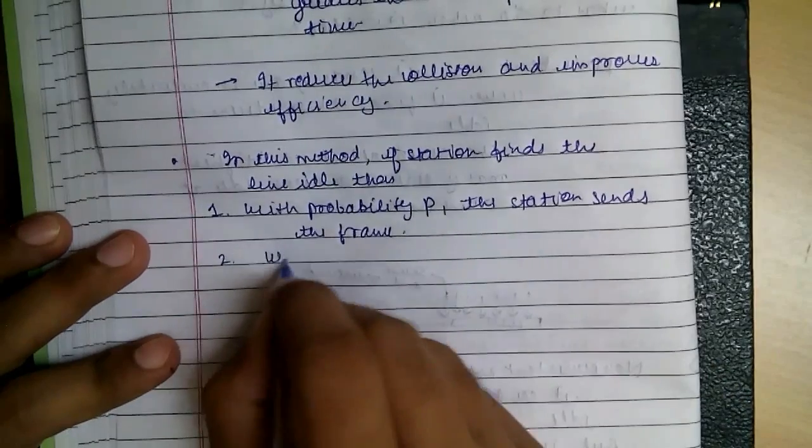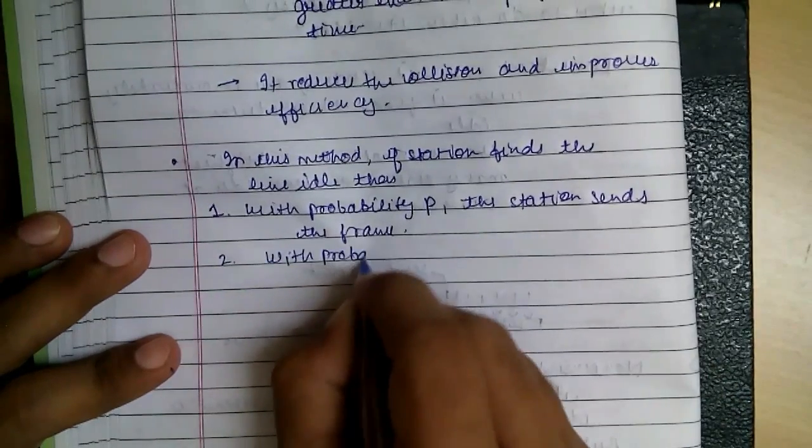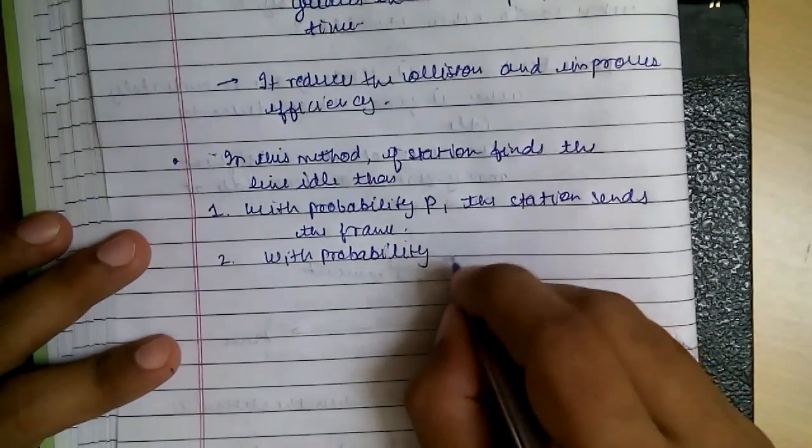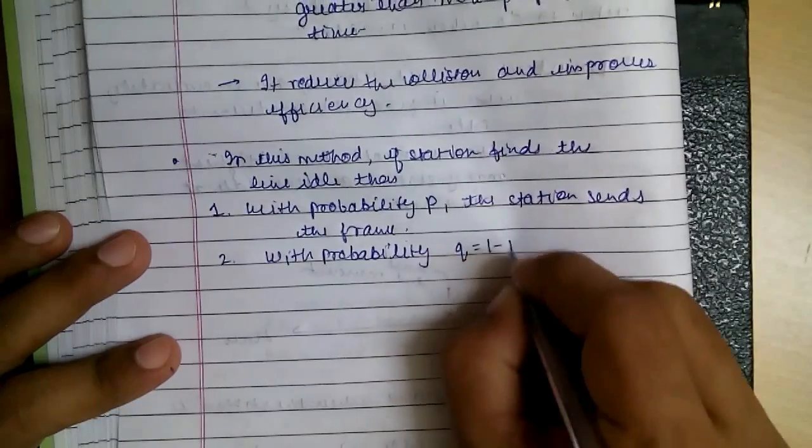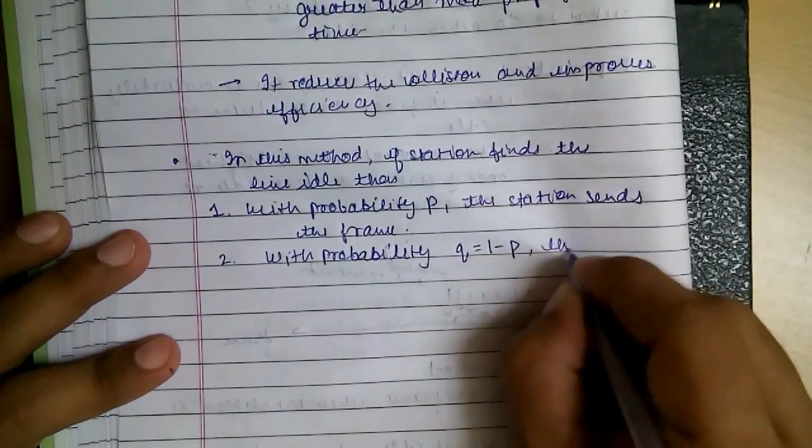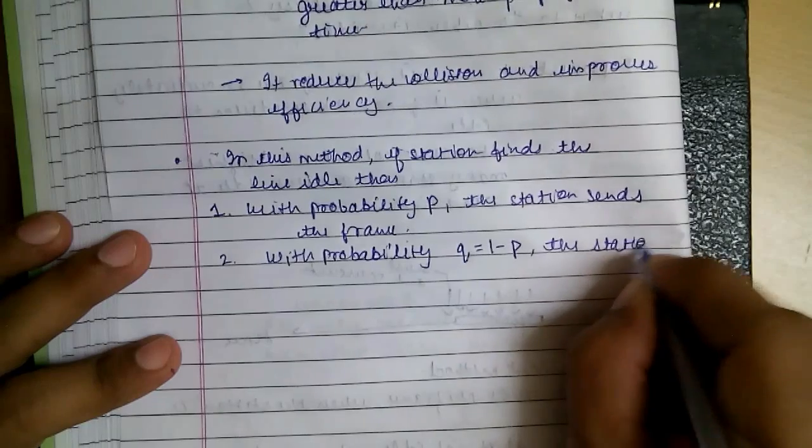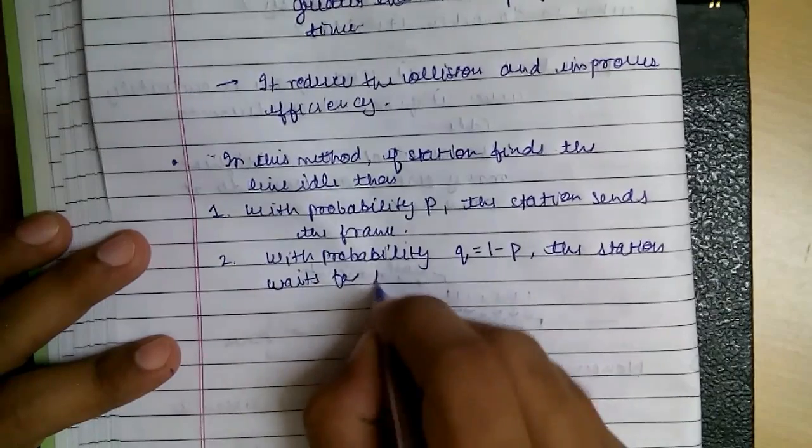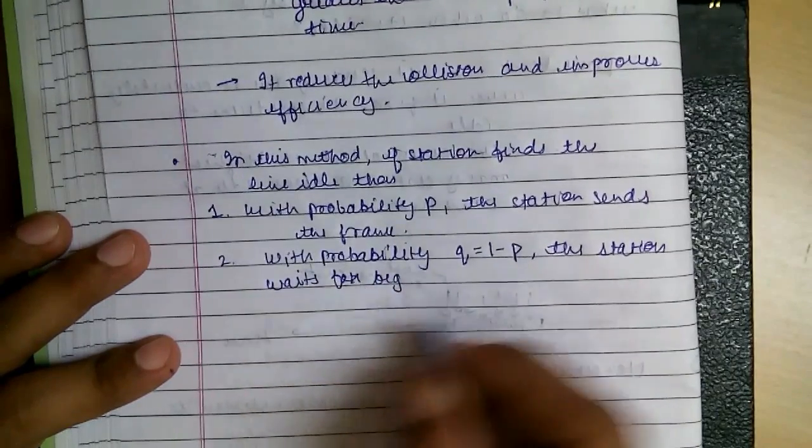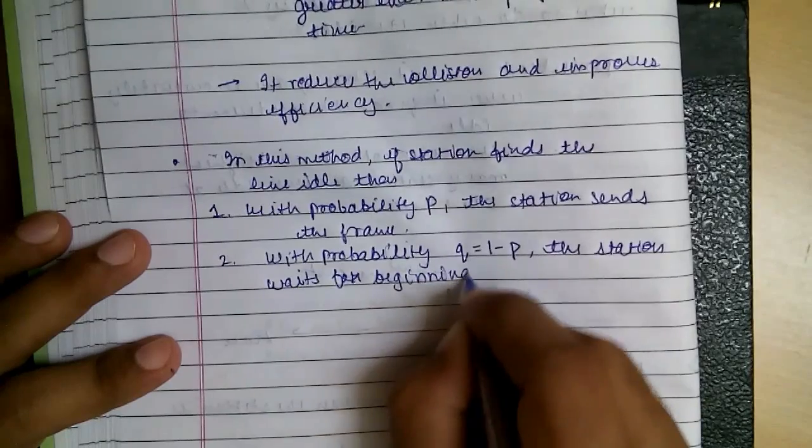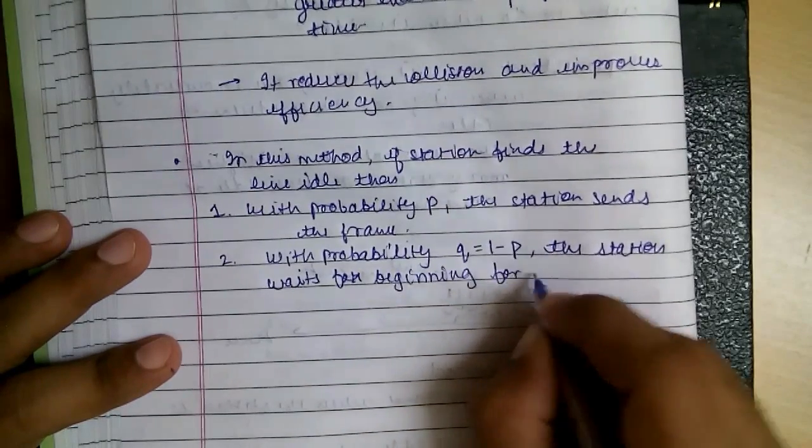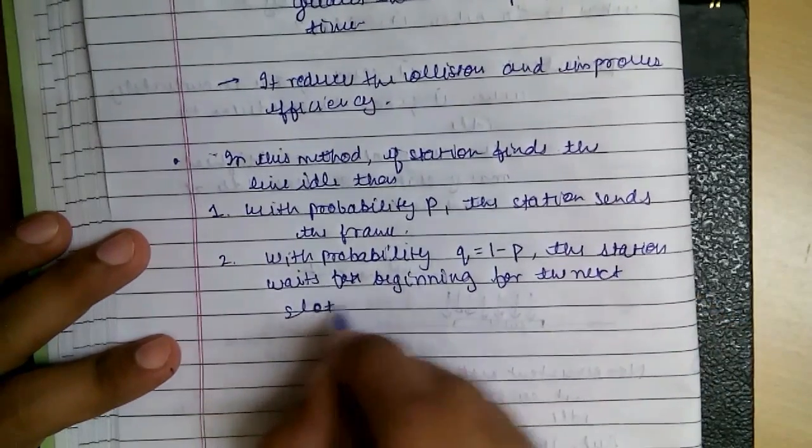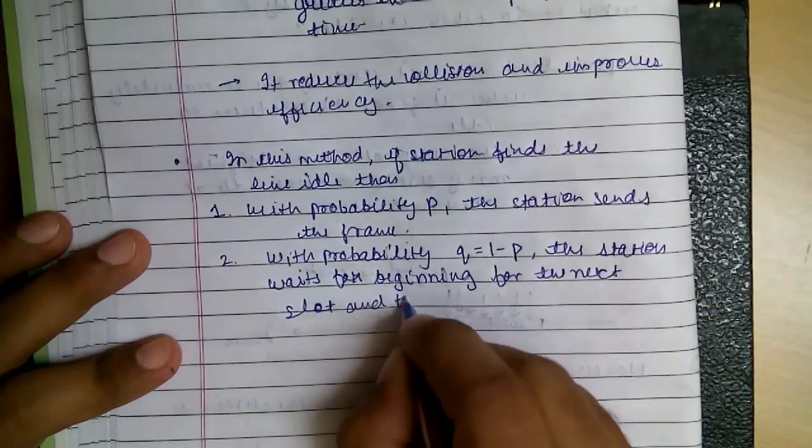And with probability, so if P is the probability of sending, then Q is equal to 1-P. The station waits for, that is it doesn't send and waits for the next slot to begin, and then it checks again.